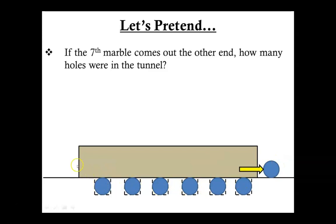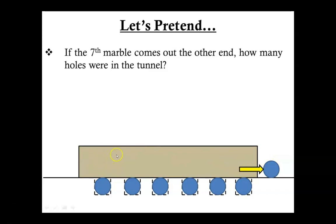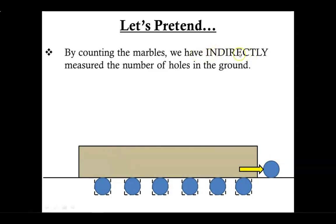So was I actually measuring or counting the number of holes? No. I was counting the number of marbles. But because I know the relationship of marbles to holes is a one-to-one relationship, by counting the number of marbles, I've actually counted the number of holes. So we have indirectly measured one thing by directly measuring something else.